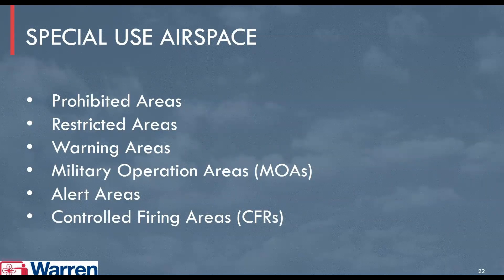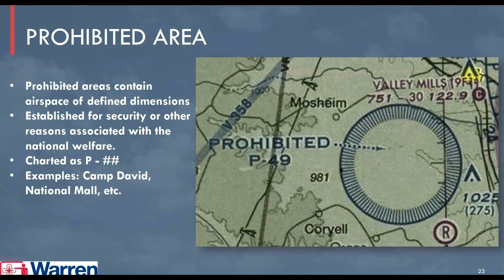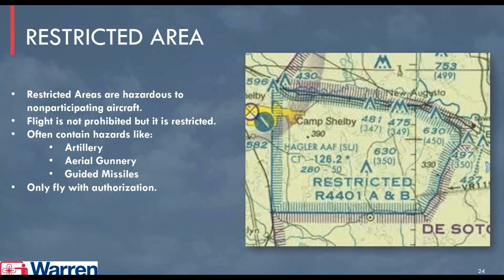Let's talk about special use airspace. There are prohibited areas, restricted areas, warning areas, military operation areas (also known as MOAs), alert areas, and controlled firing areas (also known as CFAs). A prohibited area will stick out — it will say the word 'prohibited,' have a very pronounced boundary, and have a P followed by a number identifying which prohibited area it is. These have airspace of defined dimensions established for security or reasons associated with national welfare. Examples might be the National Mall in D.C. or Camp David, charted as P followed by numbers.